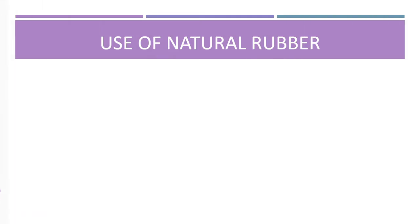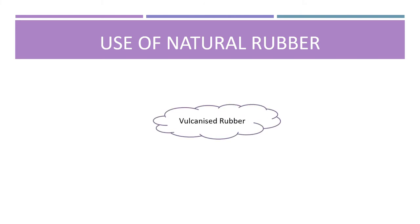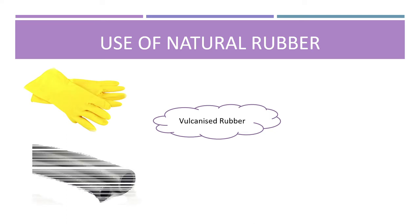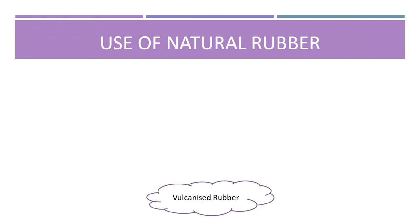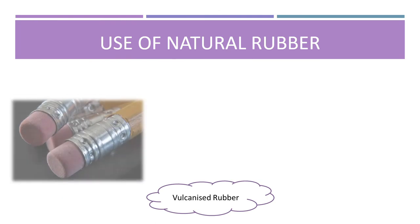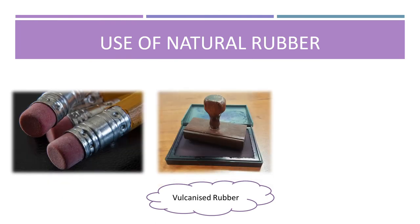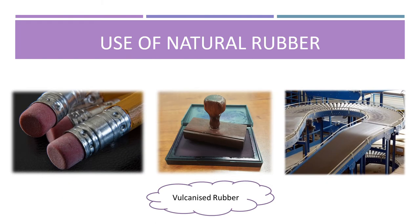Natural rubbers are further processed to become vulcanized rubber, which has enhanced properties compared to natural rubber. Vulcanized rubber is used in the making of gloves, rubber tubes and tires. You may have also used erasers and rubber stamps, and seen conveyor belts that are made from vulcanized rubber.